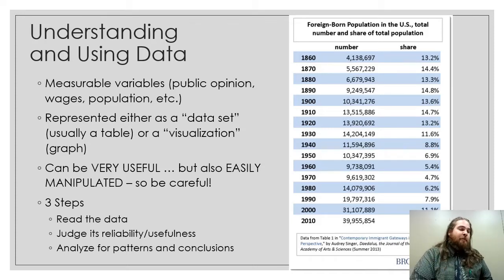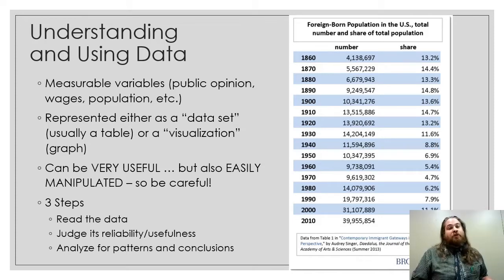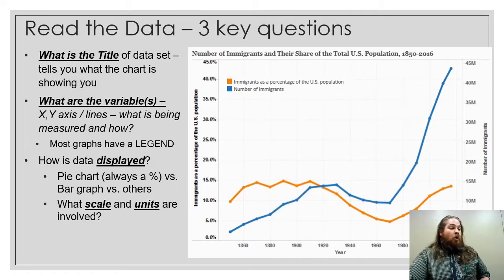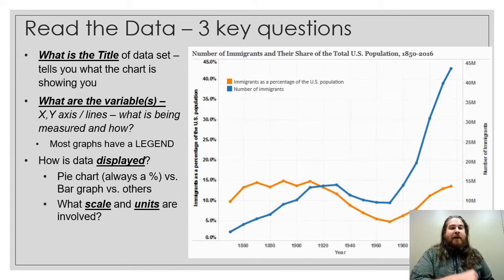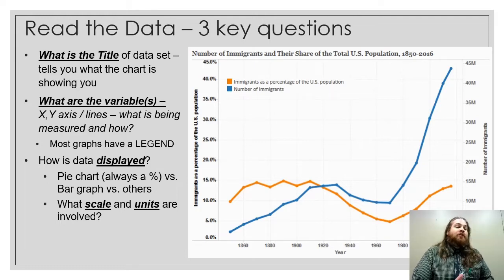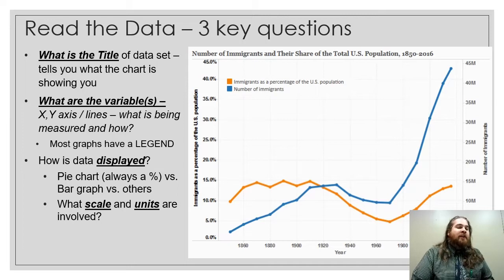There are three steps to looking at any data. One: read the data. Two: judge its reliability and usefulness to you. Three: analyze for patterns and conclusions — which is ultimately what you're doing with any evidence. When we read the data, we have three key questions. One: what is the title? I cannot emphasize this enough — the title usually tells you exactly what you're looking at. Two: what are the variables, the x and y axes? The x axis runs horizontal, the y runs vertical. These tell us what is being measured and how. For instance, in this graph, we are looking at immigrants as a percentage of the US population versus the total number of immigrants. We can see that the total number doesn't always coincide with immigrants as a percentage of the population — in the 1970s and 80s, there were more immigrants than ever before, but as a percentage they were actually lower. That tells us something about population in the United States overall.